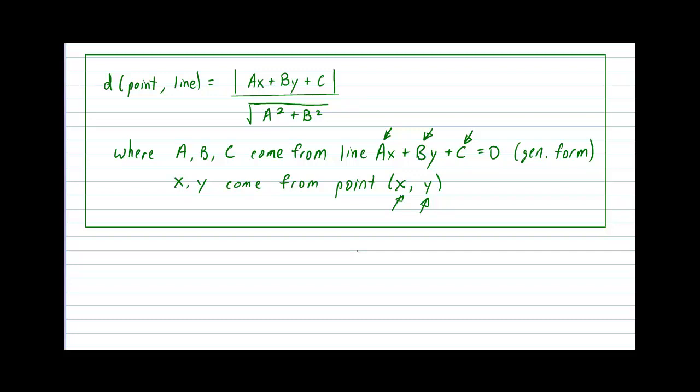Okay, so there's a lot of letters to plug in, but the letters do come from very specific locations. The A, B, and C come from the A, B, and C in the equation of a line written in general form. This is a line to which you're trying to find a distance to, but it has to be written in general form. And the x and y come from the x and y values of the point that you're trying to find a distance for.